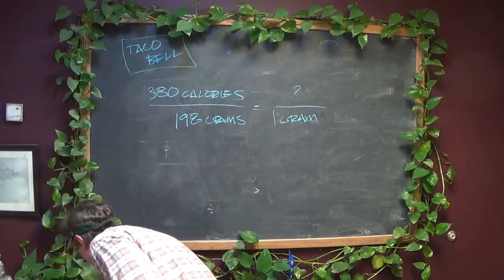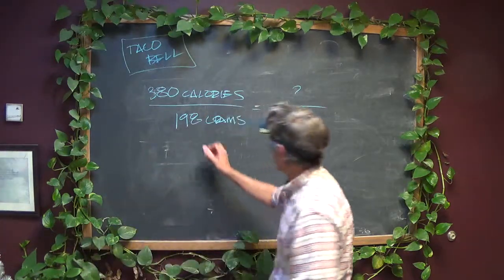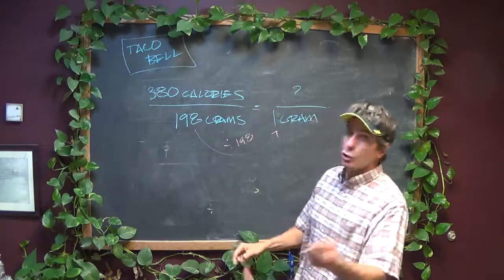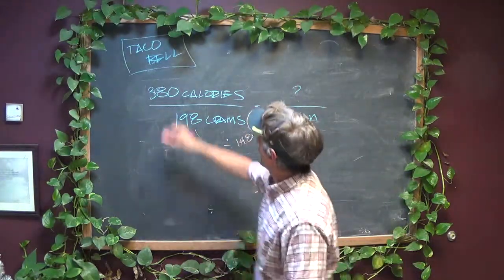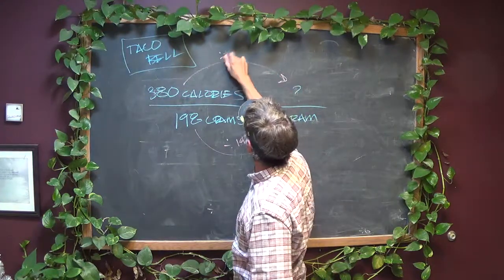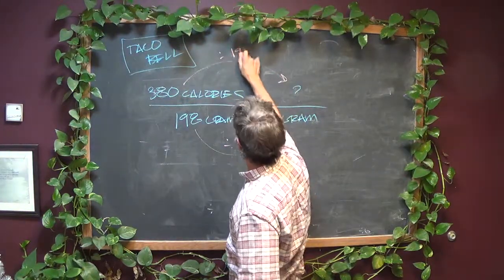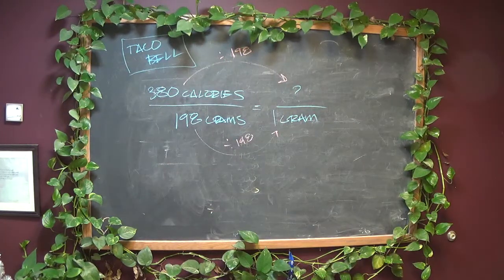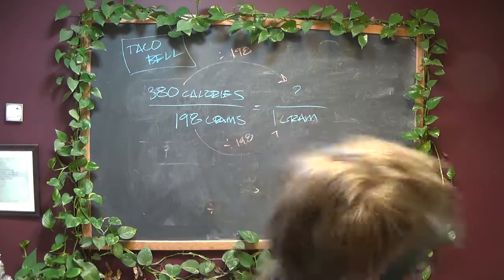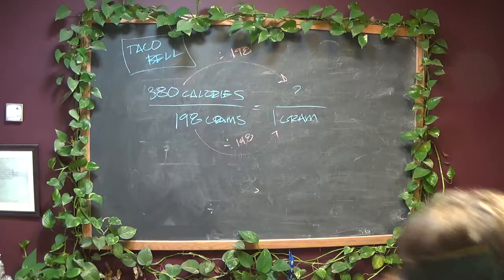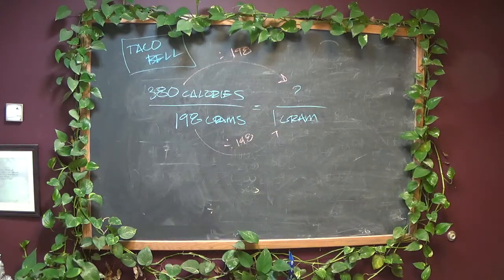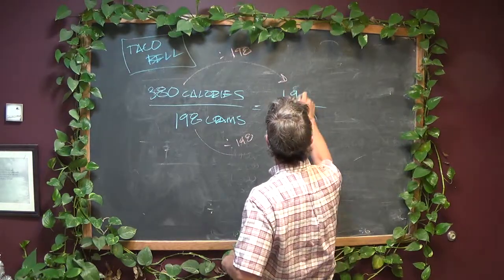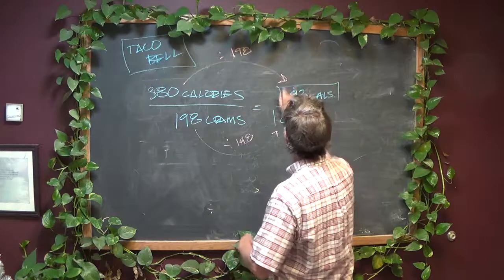This is what we have to do: convert this to this. How do you get from 198 grams to 1? You divide by 198. So to get from 380 to the question mark, we divide by 198, and I cannot do that math in my head. We do 380 divided by 198, which I get 1.9.